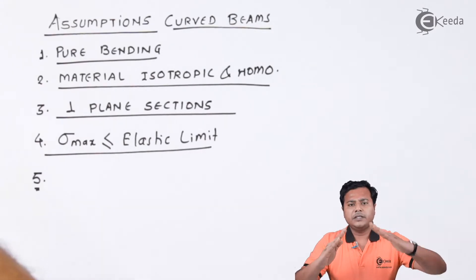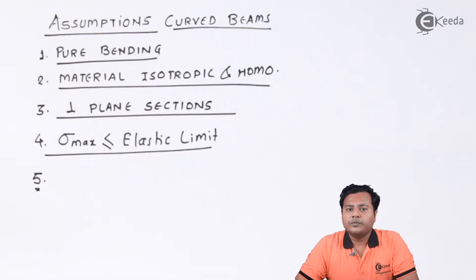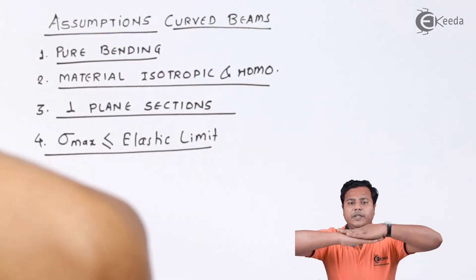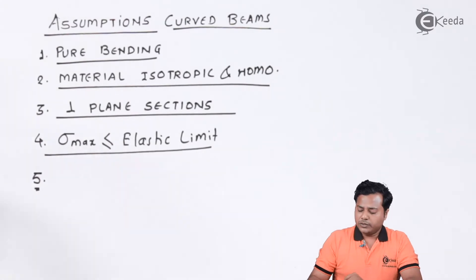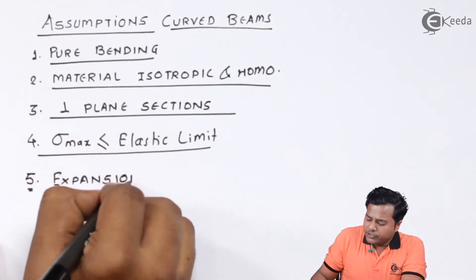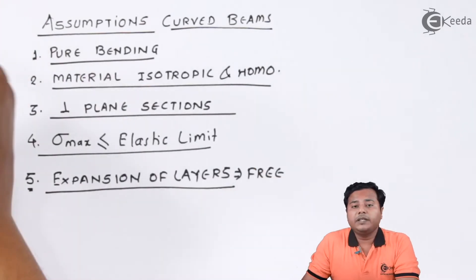So when the curved beam is concerned, we have assumed that all the curved layers are free to expand on their own. That means the layers after application of load will expand in the same manner. They will not expand differently because that will induce shear loading inside in between them. That's why expansion will happen altogether. So the next one is expansion of layers will happen in the free manner.